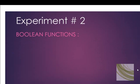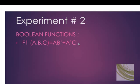In experiment number two we are discussing boolean functions. The first boolean function is F1 which has a domain of three variables A, B, and C, which is equal to A AND B-complement, plus A-complement AND C.